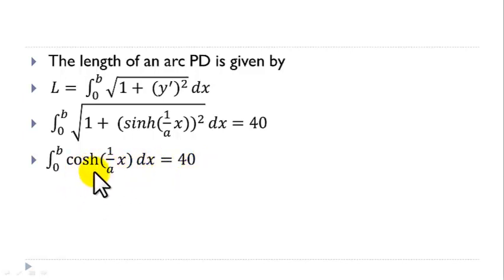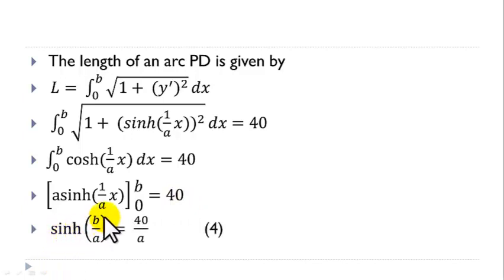Integrating this, we obtain a sinh of x over a from 0 to b equal to 40. And that will give us sinh b over a equal to 40 over a. We number this as equation 4.